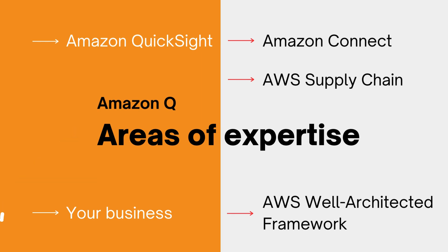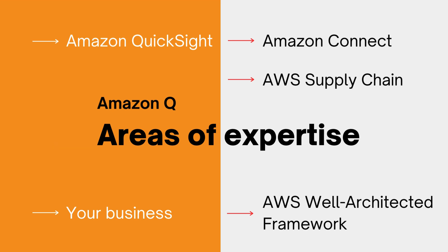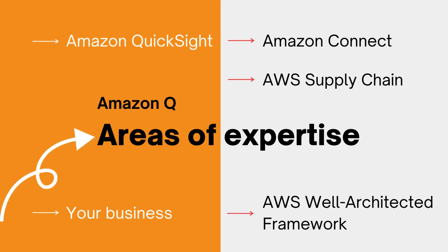Amazon Q has many areas of expertise. Users can access Amazon Q through the AWS Management Console, individual company documentation pages, or developer environments like Slack and other third-party apps. There are several areas of expertise where you can use Amazon Q — for example, Amazon QuickSight, Connect, Supply Chain, and the Well-Architected Framework. Of course, you can use it in your business as well. Let's explore each one of those areas.